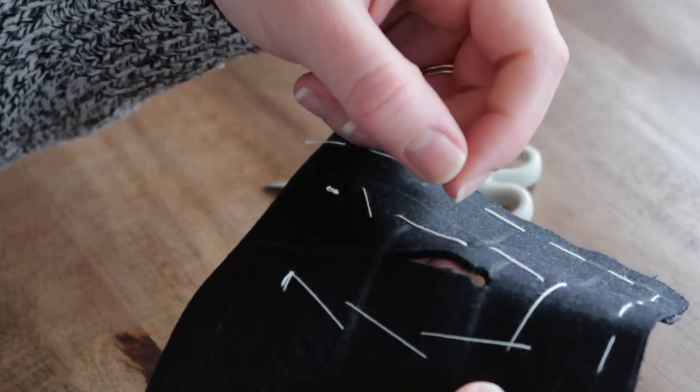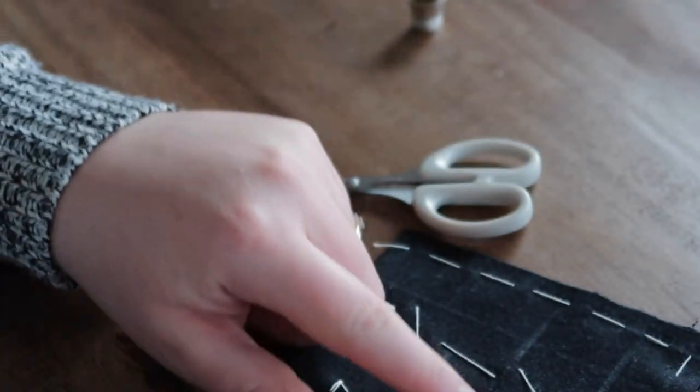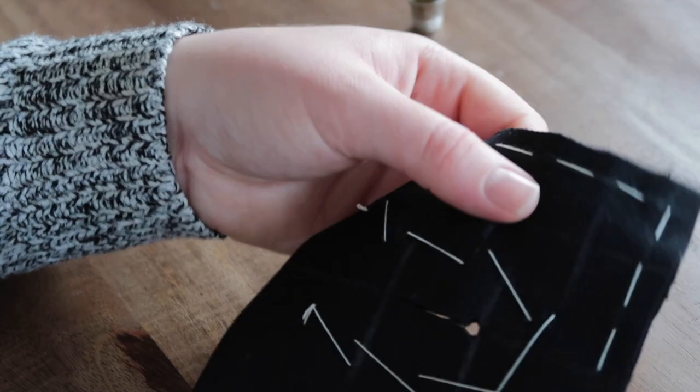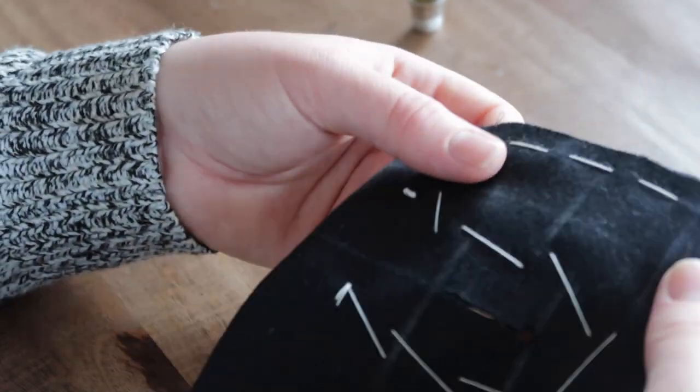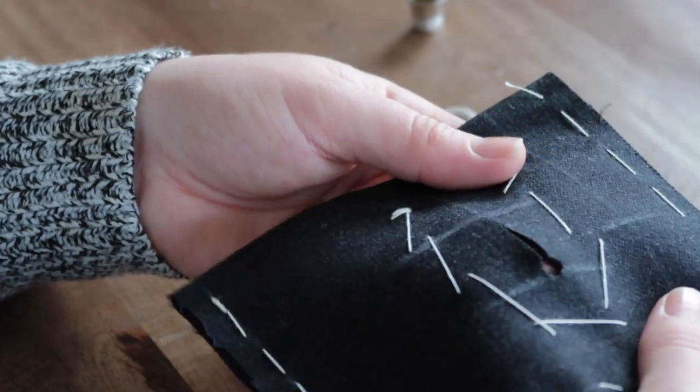We're going to do the overlocking with a regular thread. Normally you have to use a thread that is very close to the color of your fabric, so I should technically use a dark navy, a dark blue, but for demonstrational purposes I'm going to use a white.